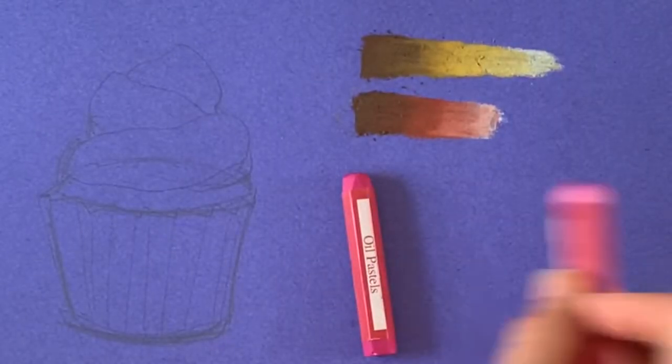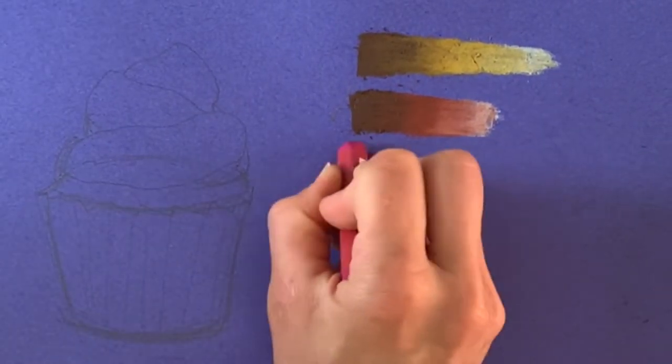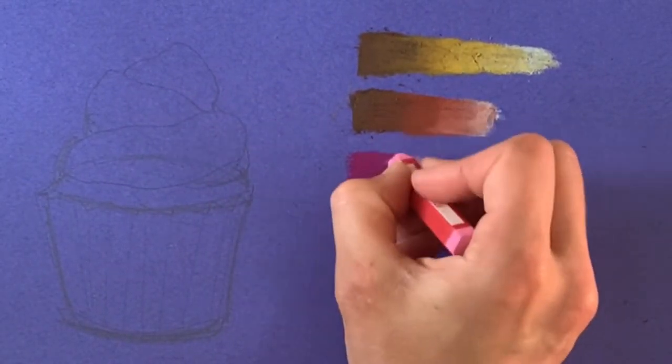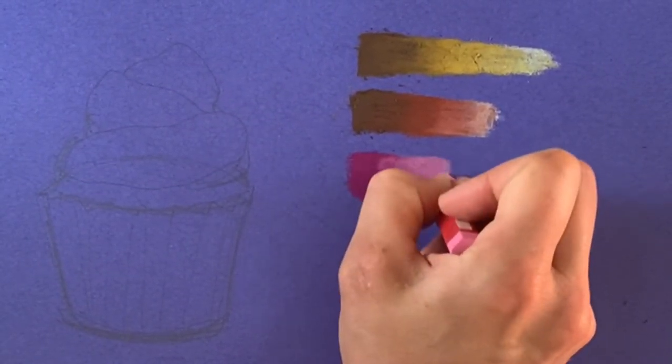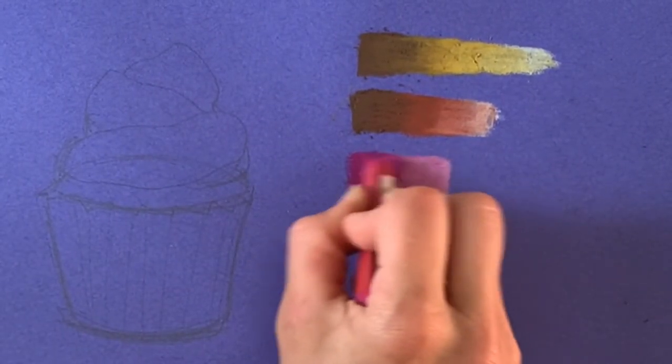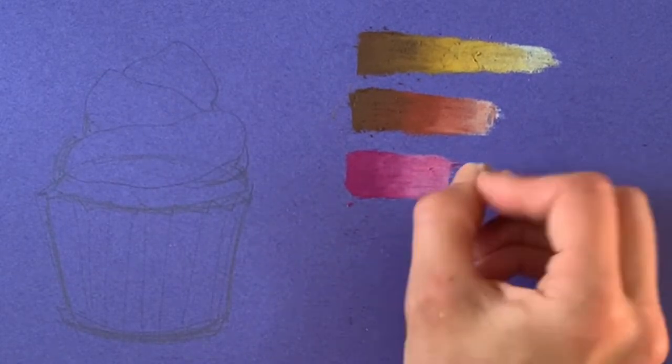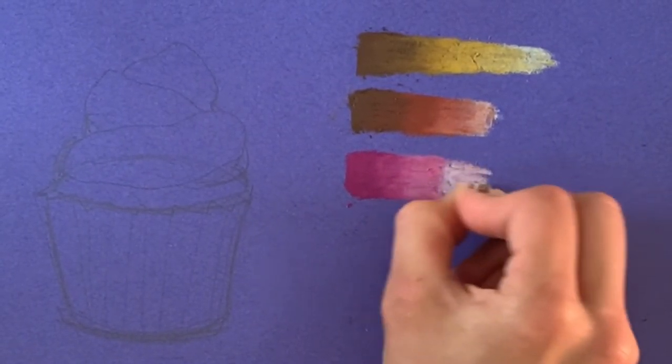Repeating this concept, find any dark, medium, or light version of one color or one color family to create a gradient. So for example, I'm using dark pink, light pink, and white. Looking in your pack of oil pastels, you can create any number of gradient mixes following that same concept.